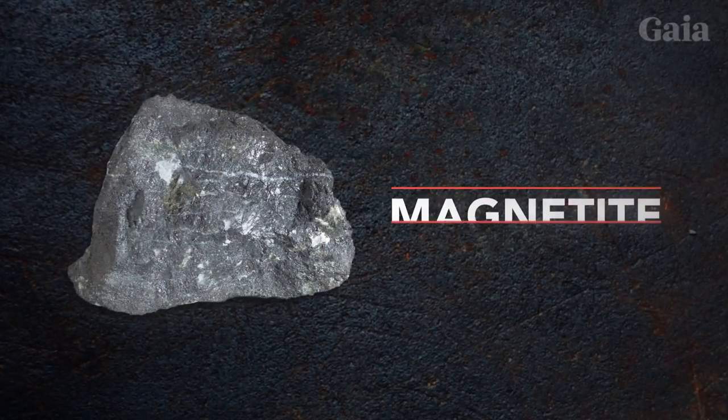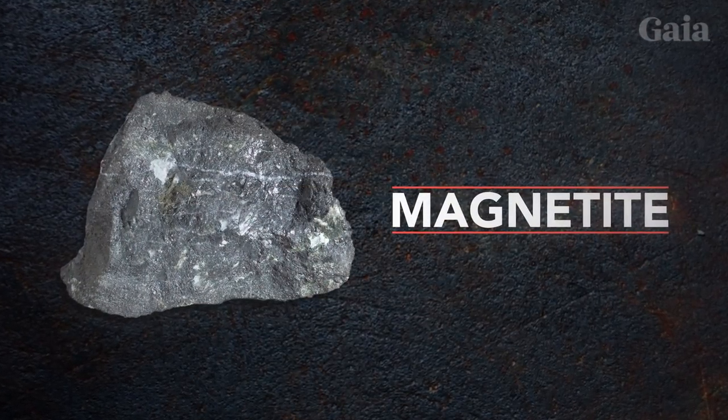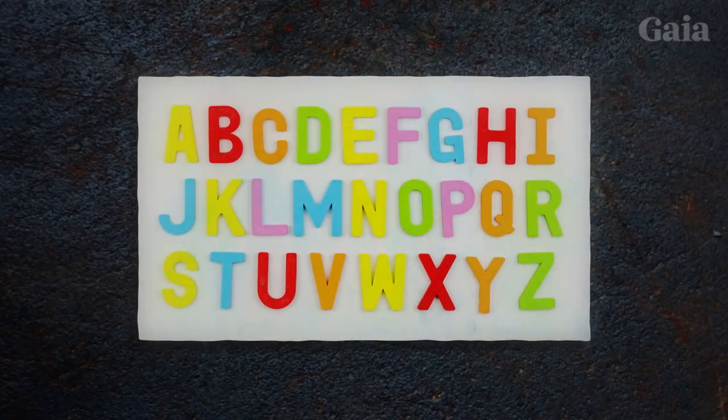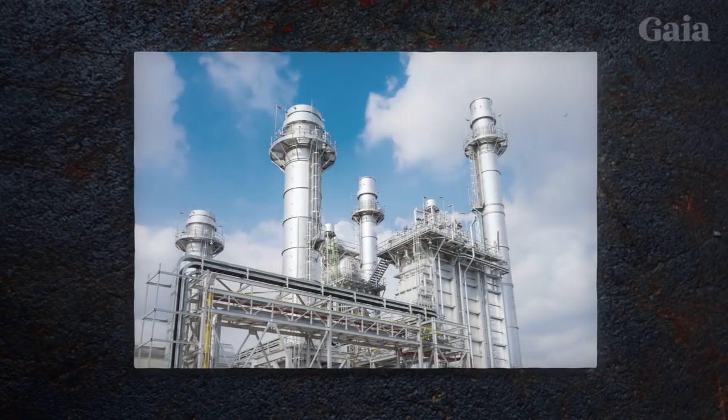This is magnetite, one of the most magnetic substances on Earth. As you can probably guess, it has a diverse range of uses, from fridge magnets to generating electricity in power plants.